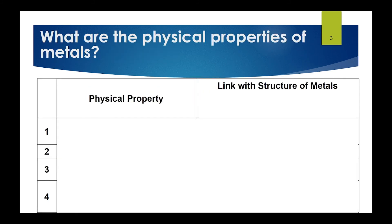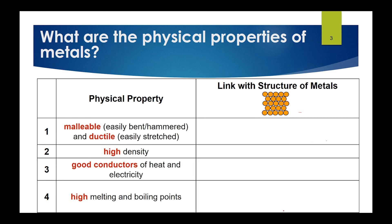Let's look at the first key question: what are the common physical properties of metals? Think about what you already know from lower secondary. Here is the structure of a metallic solid, which you learned in kinetic particle theory. There are four key physical properties: first, metals are malleable — they can be bent or hammered into different shapes — and ductile, meaning they can be stretched into wires. Second, they have very high density. Third, they are good conductors of heat and electricity. Fourth, they have very high melting and boiling points compared to other elements in the periodic table.